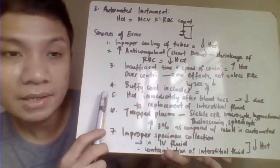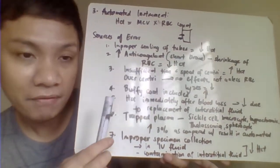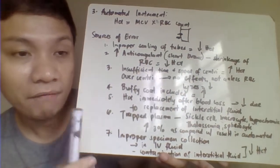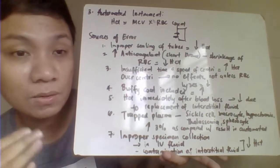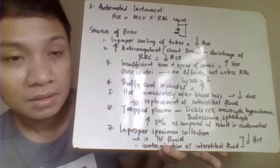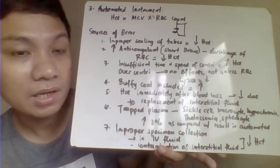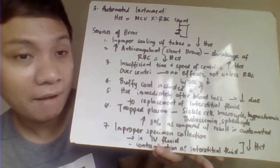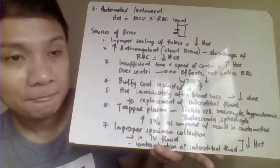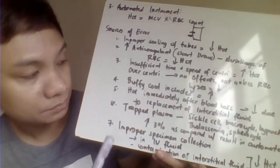Fourth, including the buffy coat in the reading — the buffy coat must not be included. If it is included, it will falsely increase the hematocrit reading.